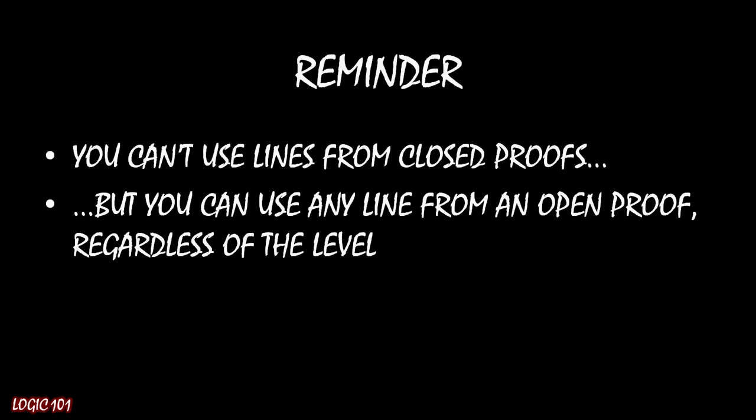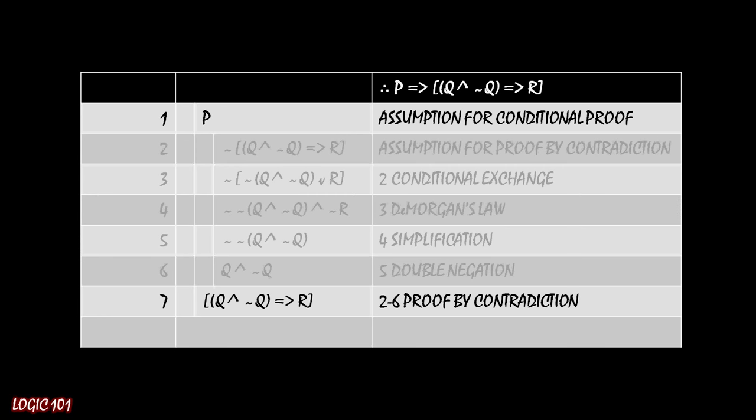But when you're nesting conditional or proofs by contradiction together, this can become a little bit more complicated. So one thing that some professors will recommend, and isn't a bad idea if you're still getting the hang of this, is in this proof right here, for example, once you close off your proof, in this case the nested proof, that proof by contradiction, to either cross out the lines, or in this case because I'm using a computer, I grayed out those lines to remind myself that I can't use any of those lines anymore. Those things are sowed away, they're gone, we can never use them again,